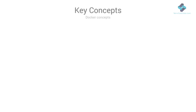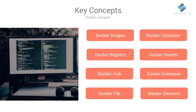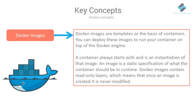Here are some Docker terms and concepts you should get familiar with before going further in the course. Docker images are templates or the basis of our containers — we can deploy these images to run our containers on top of the Docker engine. A container always starts with an image and is an instance of that image. An image is a static specification of what the container should be at runtime, including the application code and runtime configuration settings.